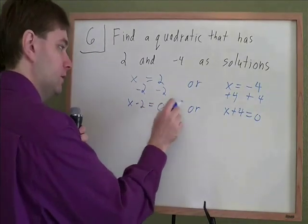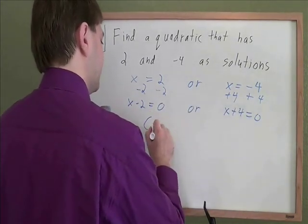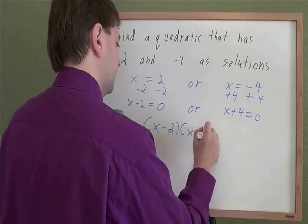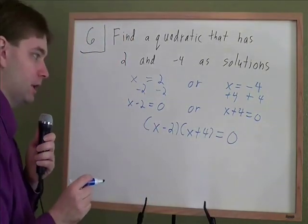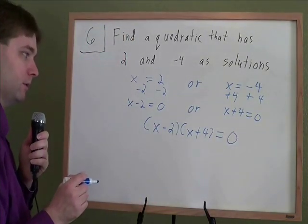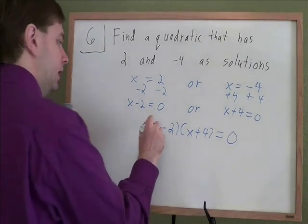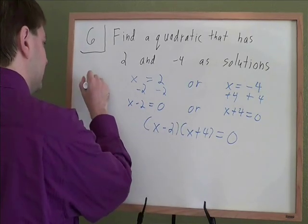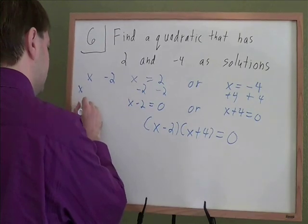So if you have something equal 0 or something else equal 0, that's the same as just having them multiplied together and still equaling 0. And then from there, this should be looking a little bit more familiar now, we're just going to go and foil this out. And to foil it out, you can do your first outside inside last, or I just make a big old box and do it. We've got x minus 2 and x plus 4.